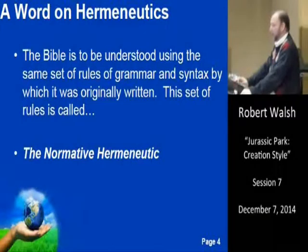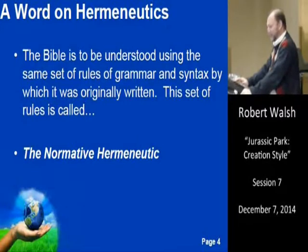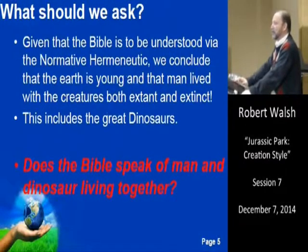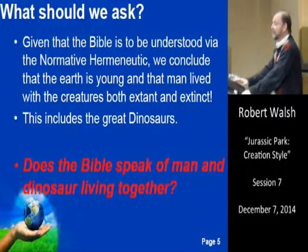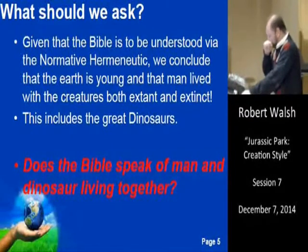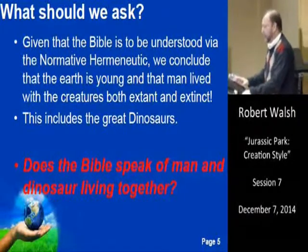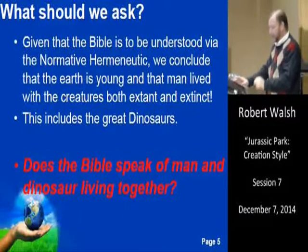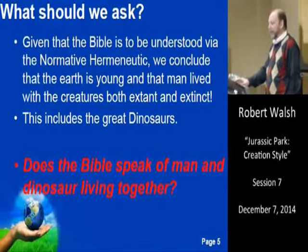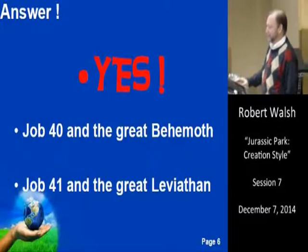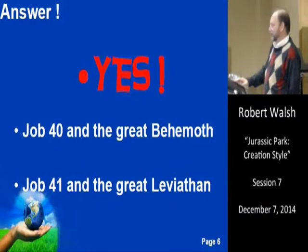This set of rules is called the normative hermeneutic — that's our two million dollar term from the past six sessions. Given that the Bible is to be understood via the normative hermeneutic, we conclude that the earth is young and that man lived with creatures both extant and extinct, such as the dodo bird. This includes the great dinosaurs. The answer to whether the Bible speaks of man and dinosaur living together is a big whopping yes.